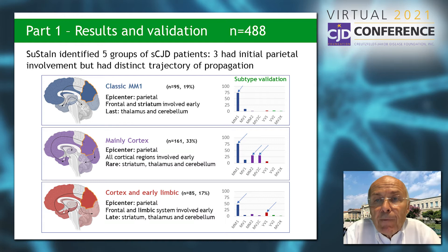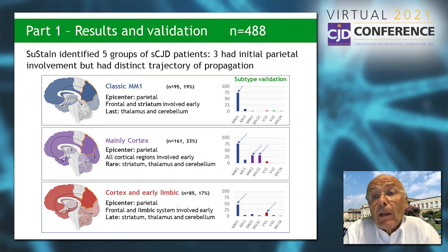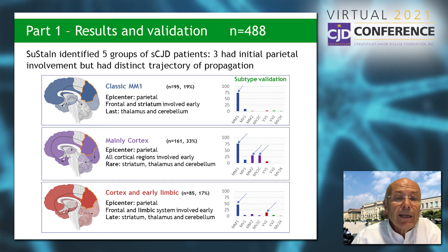SUSTAIN identified five groups of CJD patients. Three groups had initial parietal involvement but distinct trajectories of propagation. The first group, named classic MM1, had its epicenter in the parietal lobe, with the frontal lobe and striatum involved early, while the thalamus and cerebellum were involved only last. When compared with autopsy-confirmed subtypes, this group contained mainly MM1 and VV1 patients. The second group, named mainly cortex lesion, also had its epicenter in the parietal lobe, with all cortical regions involved early, while involvement of the striatum, thalamus, and cerebellum was rare.